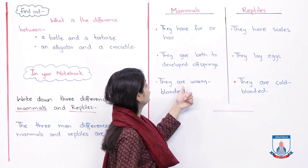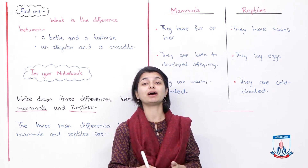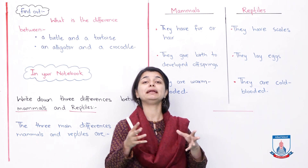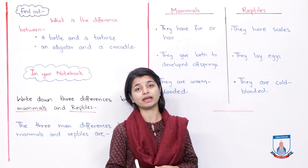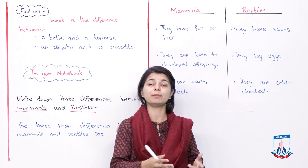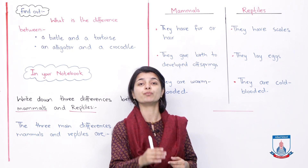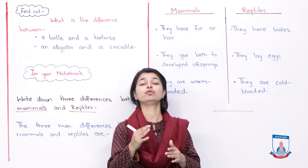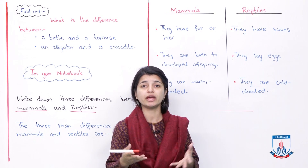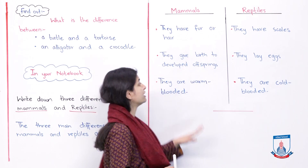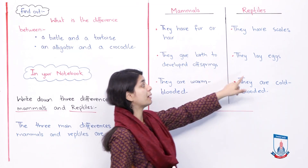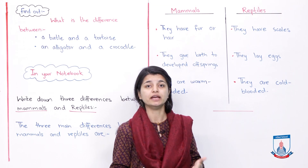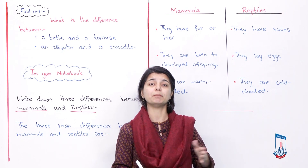The second difference is that mammals give birth to fully developed offspring. It doesn't happen that their egg comes first and then hatches — no, the mammal baby is born in a proper, completely developed form capable of life, with the whole body formed. Reptiles, on the other hand, lay eggs, and the newborn comes out after hatching.